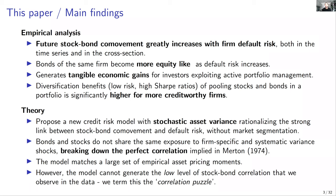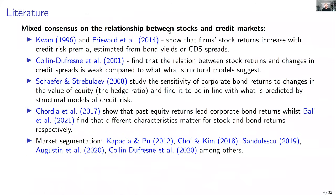However, the model fails by a large amount to generate the unconditional level of correlation and covariance between corporate bonds and stocks. We document this as a new finding — what we call the 'correlation puzzle.' For many years, the credit risk literature has dealt with the credit spread puzzle: models had trouble generating sufficient credit spreads, and that puzzle was largely solved using stochastic volatility models. What we show is that there is still room for improvement because these models fail to generate a sensible level of dependence between corporate bond returns and stock returns.